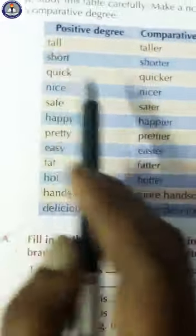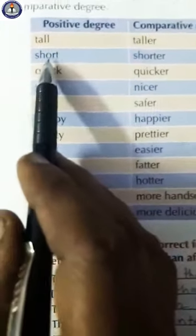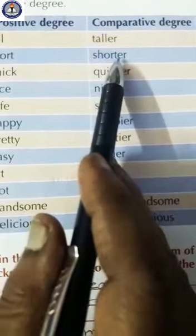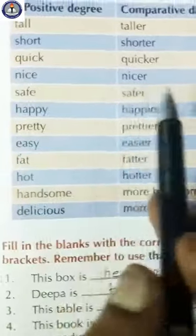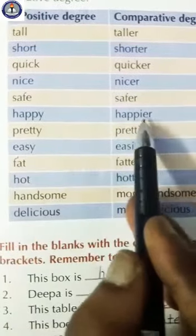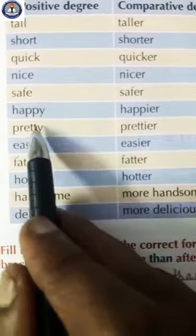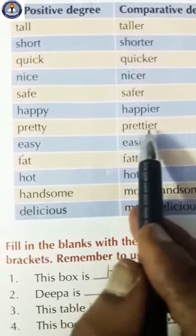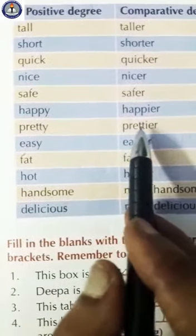Look at these positive degrees and comparative degrees. Positive degree: tall — comparative degree: taller. Positive: short — comparative: shorter. Positive: quick — comparative: quicker. Positive: nice — comparative: nicer. Safe — safer. Happy — happier. Pretty — prettier. Note the spelling change: P-R-E-T-T-I-E-R. Instead of Y, you write I, giving '-ier'.